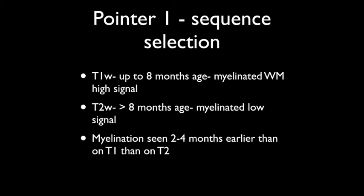Let us look at the sequences that we use typically to assess myelination. In most instances, up to the age of about 8 months of age, the T1-weighted images are pretty useful. This is particularly true on 1.5T scanners. The myelinated white matter demonstrates T1-high signal. On T2-weighted images, the myelination is indicated by presence of low signal, and these images are particularly useful after 8 months of age.